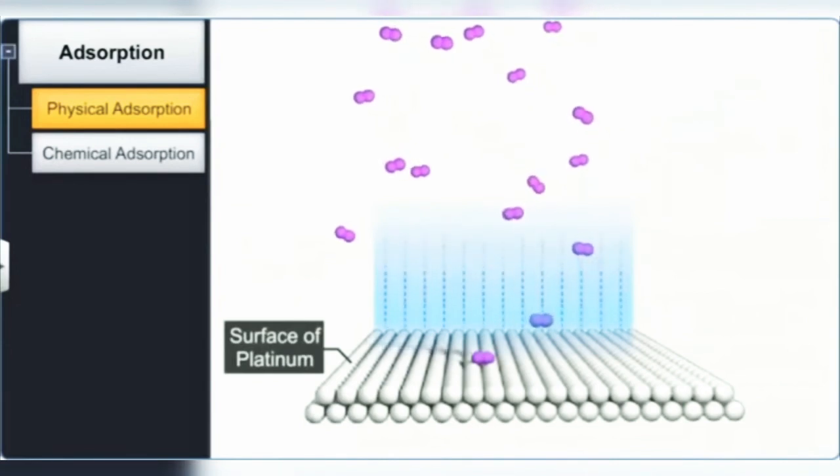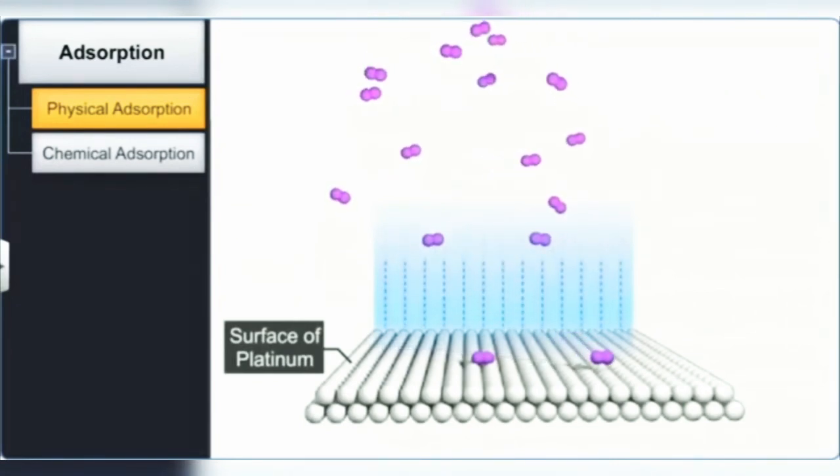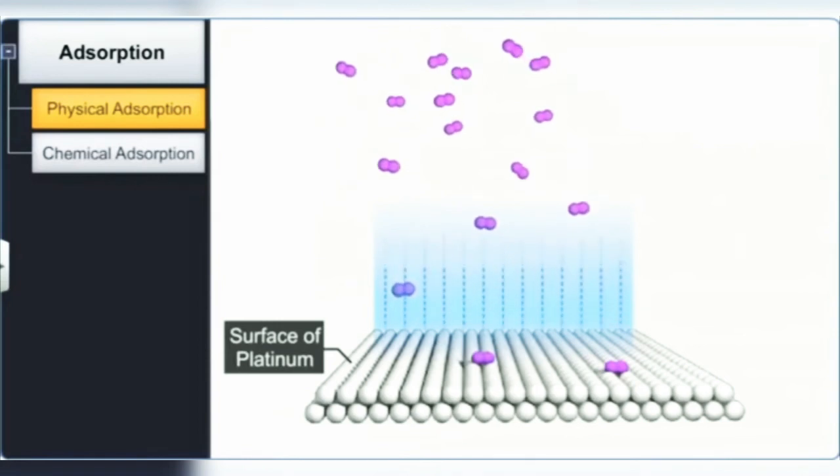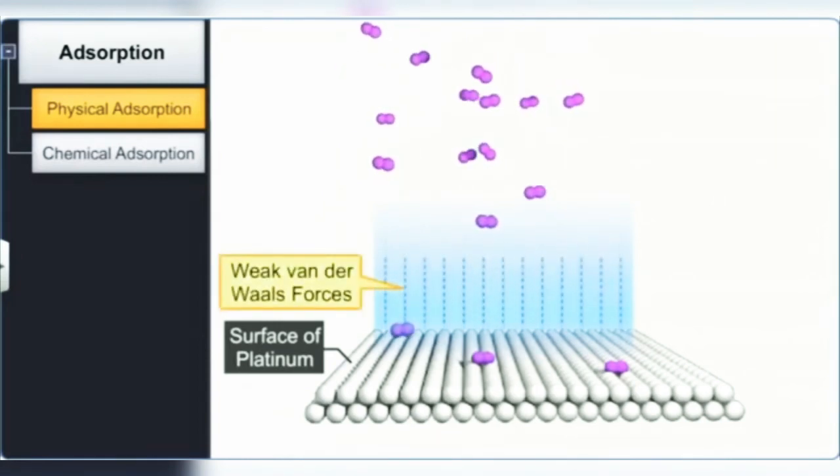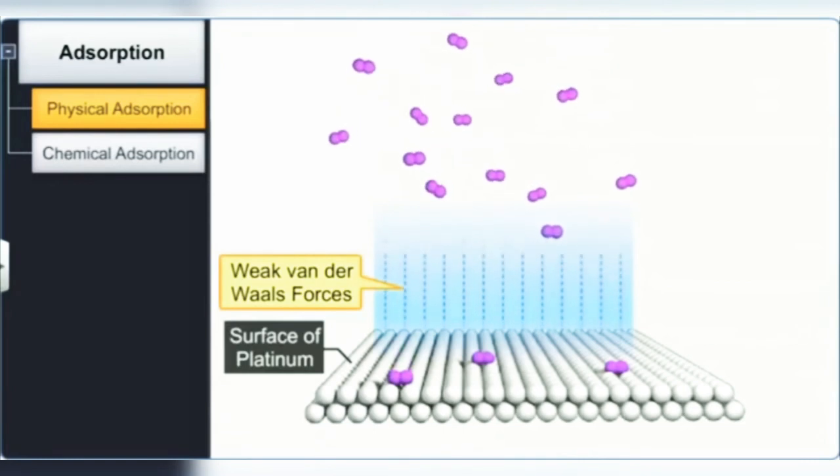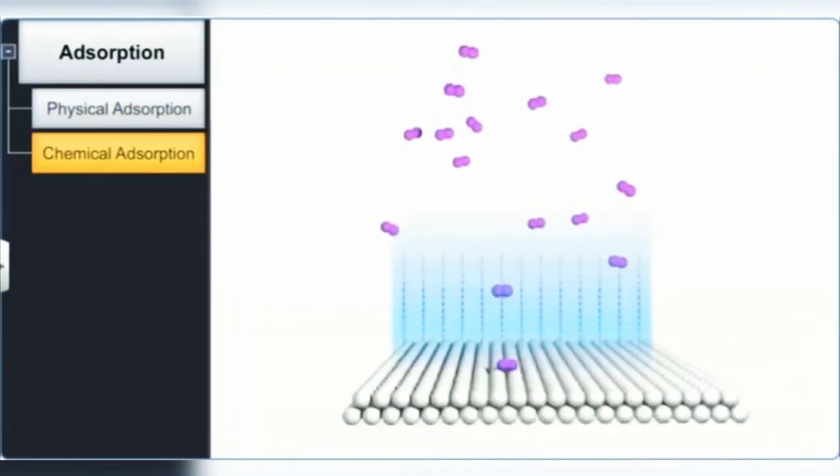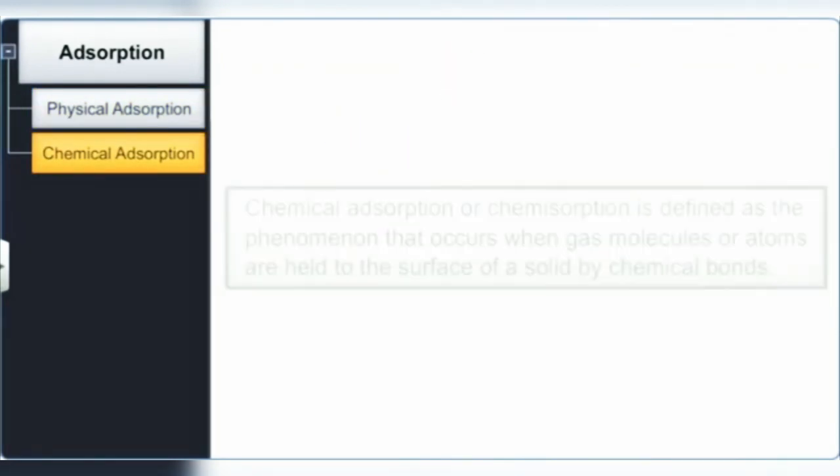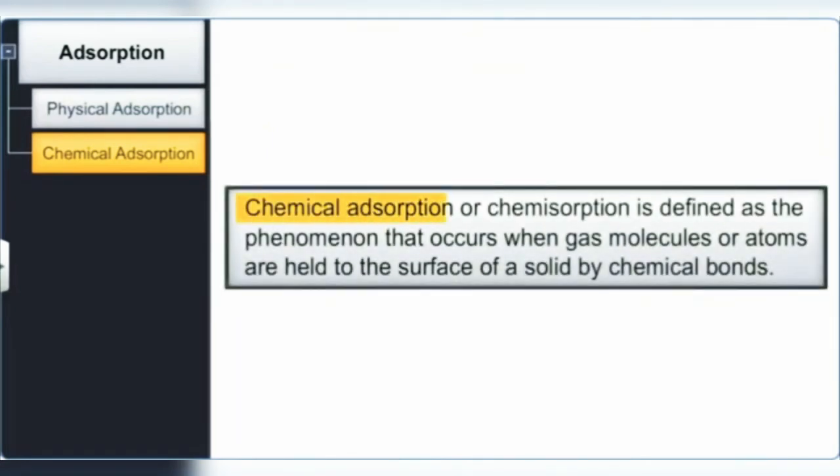Thus, we can also say that physical adsorption occurs when gas molecules accumulate on the surface of a solid by weak van der Waals forces without the formation of a chemical bond between adsorbate and the adsorbent. Chemical adsorption or chemisorption is also defined as the phenomenon that occurs when gas molecules or atoms are held to the surface by chemical bonds.